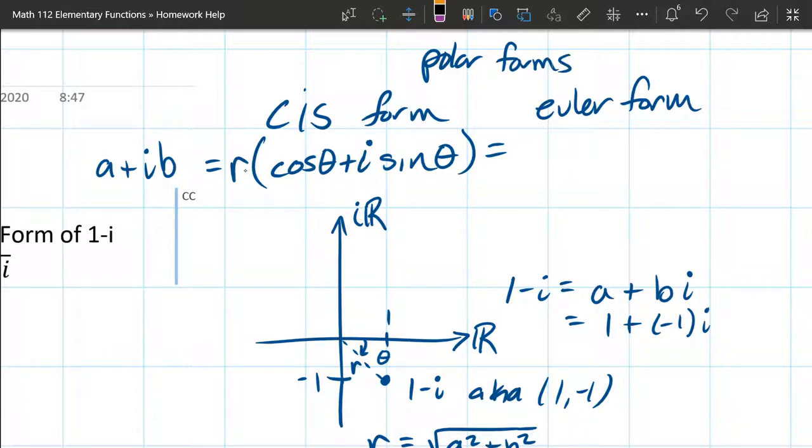What that means is they both use an r and a theta, not an x and a y. So they are given in polar coordinates. That's what polar forms mean.